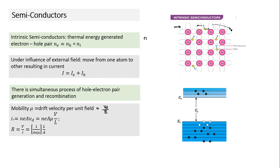The total current is given by I = NeAvd. Substituting Vd = μE, and E = V/L (potential gradient), we can rearrange to get V/I, which gives resistance. The inverse of resistivity ρ is conductivity. So conductivity = N × e × μ. This is the conductivity formula in terms of mobility.